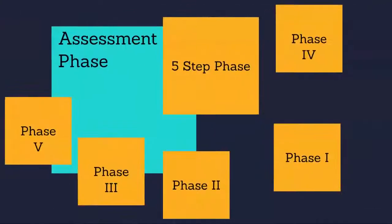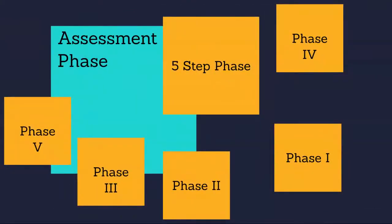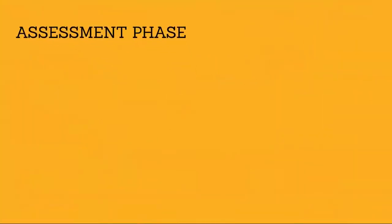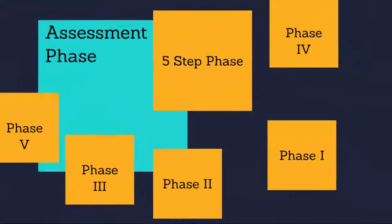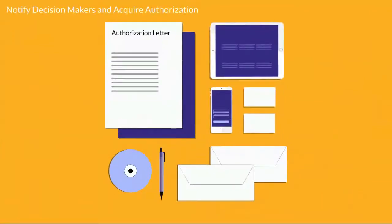The first phase of the computer investigation model is to assess the situation. This phase describes how to conduct a thorough assessment of the situation, how to establish scope and the required resources for an internal investigation, using the five-step process as shown on the screen. The first step is to notify decision makers and acquire authorization to conduct a computer investigation.